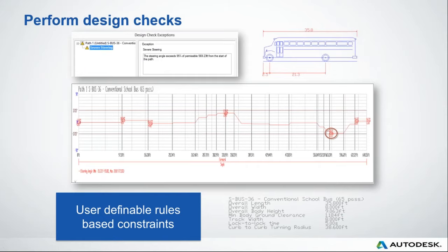Using vehicle tracking, I'm able to quickly and easily determine whether a design can accommodate vehicle movements and confirm if movement complies with rule-based constraints. I can take analysis a step further by performing design checks, accessing pathways for vehicles and evaluating whether they can follow rules based on constraints. I can go into further detail regarding steering and easily create a graph within that model. Vehicle tracking displays steering limits as well as the steering angle throughout the swept path analysis.